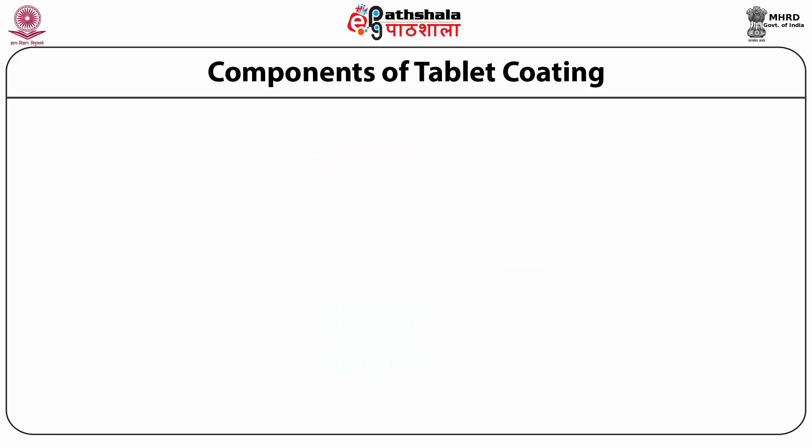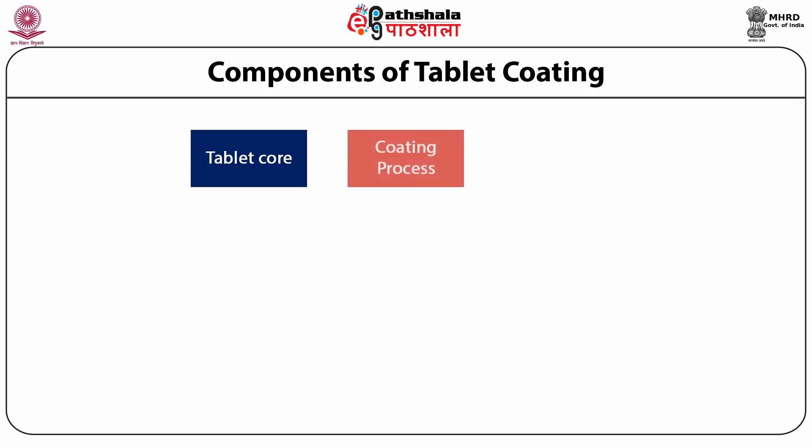All coating processes are divided into three basic components: first, tablet core; second, coating compositions; and third, coating process and equipment.